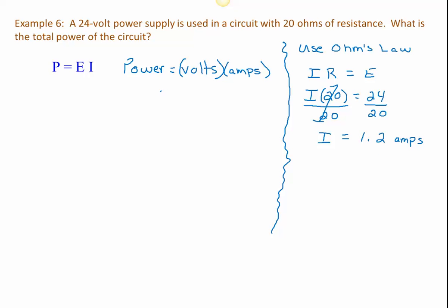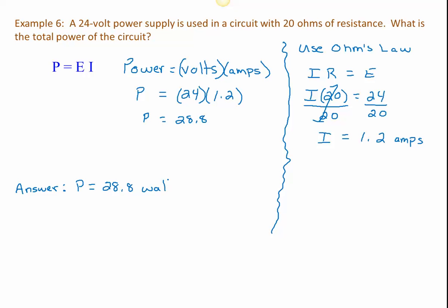Now we can come back to our power equation. We have 24 volts multiplied by 1.2 amps. That's straightforward multiplication: 24 times 1.2 is 28.8. So the total power of the circuit is 28.8 watts. Good luck with your homework and we'll be talking to you soon. Take care — enjoy the day!